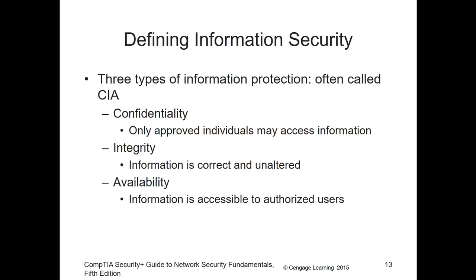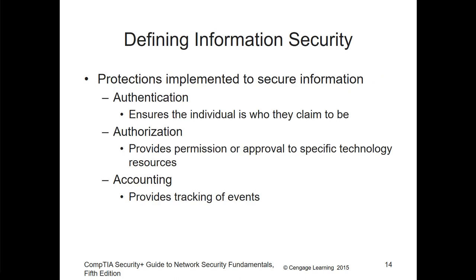Typically, we look at information security and define it as CIA — confidentiality, integrity, and availability. Confidentiality means only approved individuals have access to that information. Integrity means you can ensure that data in transit is unaltered — what was sent is what you are actually receiving. Availability means the data is accessible to the appropriate users when needed.